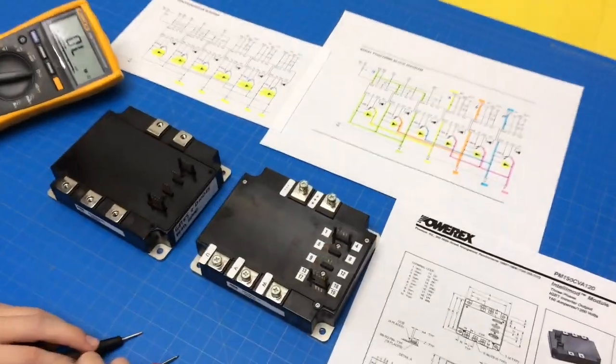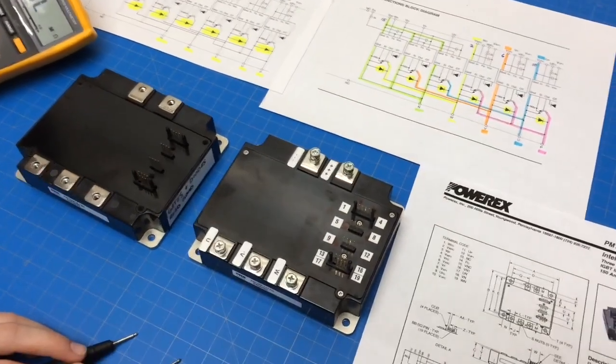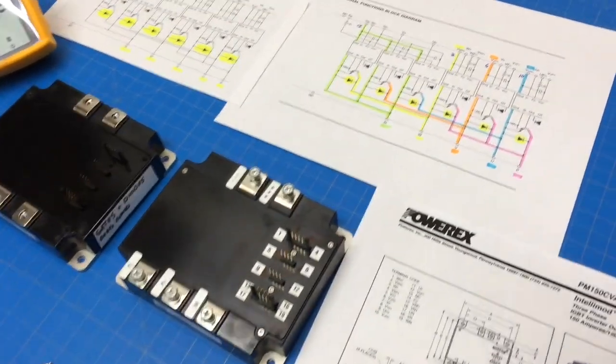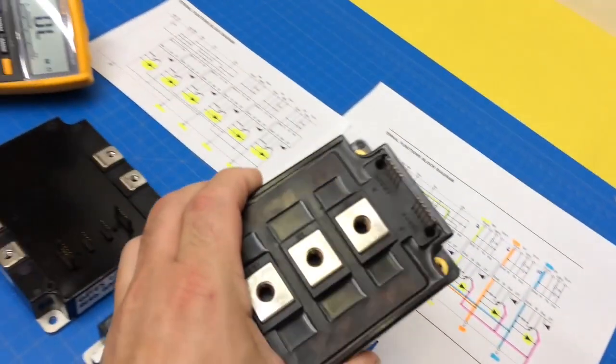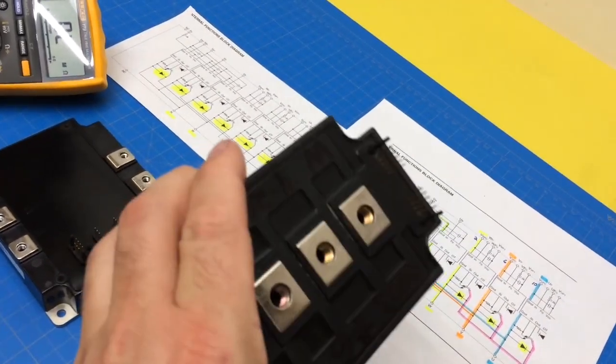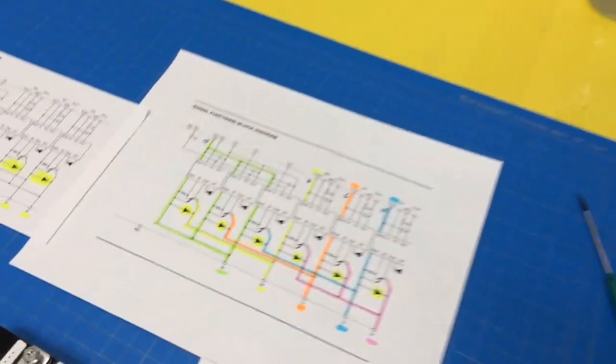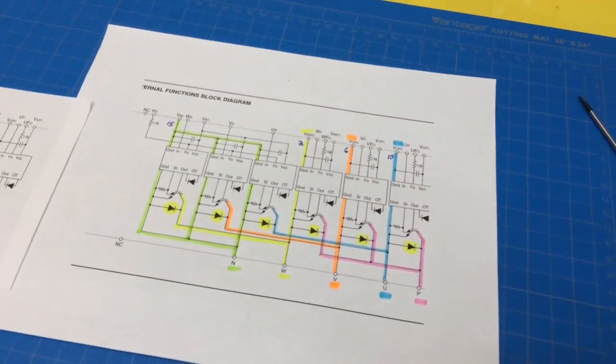Okay, Emily, let's look at testing a six-pack IGBT. This, instead of being a dual pack where there's two IGBTs and only two freewheel diodes, this one has six IGBTs and six diodes.